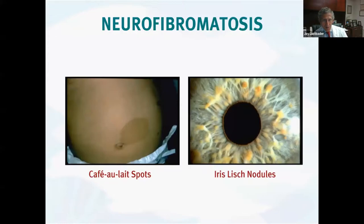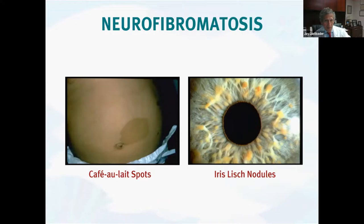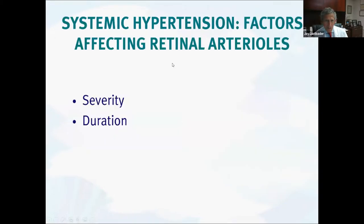The first is neurofibromatosis. I have a picture here of the Lisch nodules on the iris that we can see. Interestingly, they're actually of no effect in terms of vision or pathology in the eye, but they can be really helpful in terms of diagnosis. There are some serious problems that can occur with neurofibromatosis, whether it's fibromas in the lid or tumors in the optic nerve or in the retina, but the Lisch nodules are fun when we get a chance to find them.